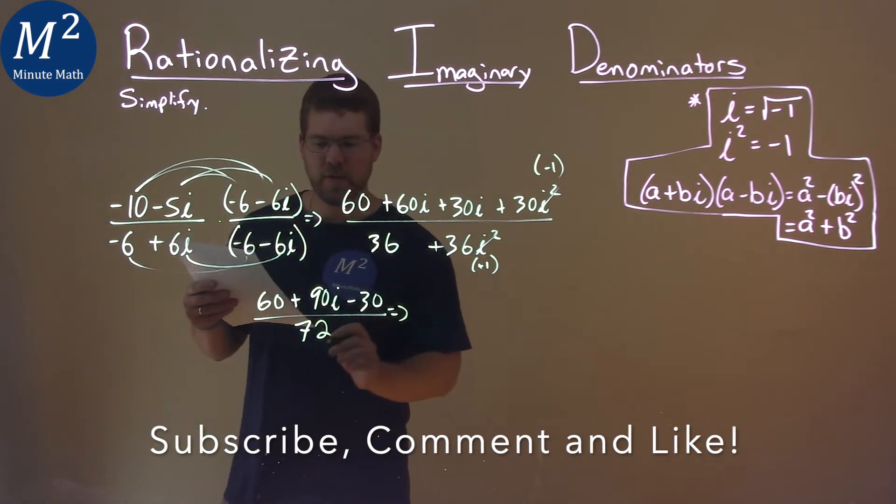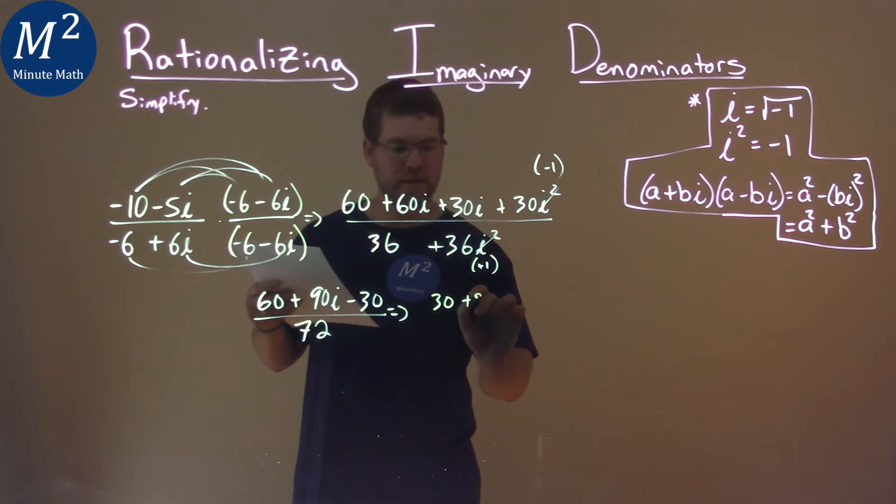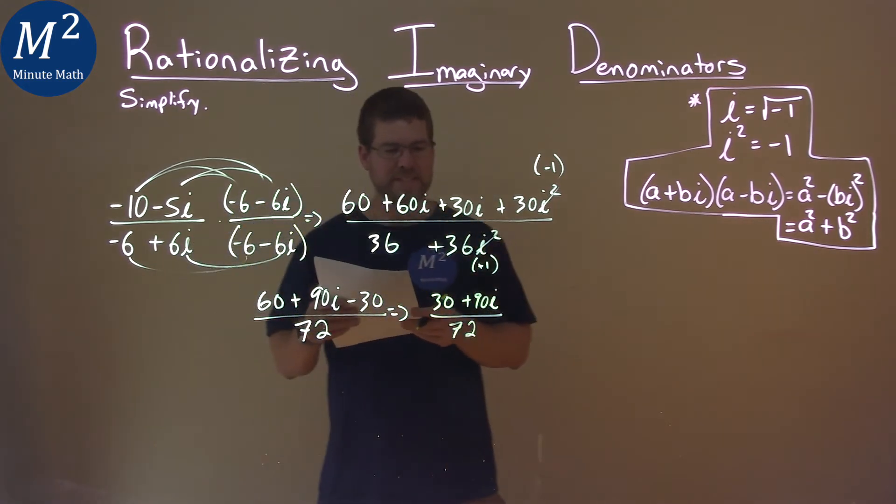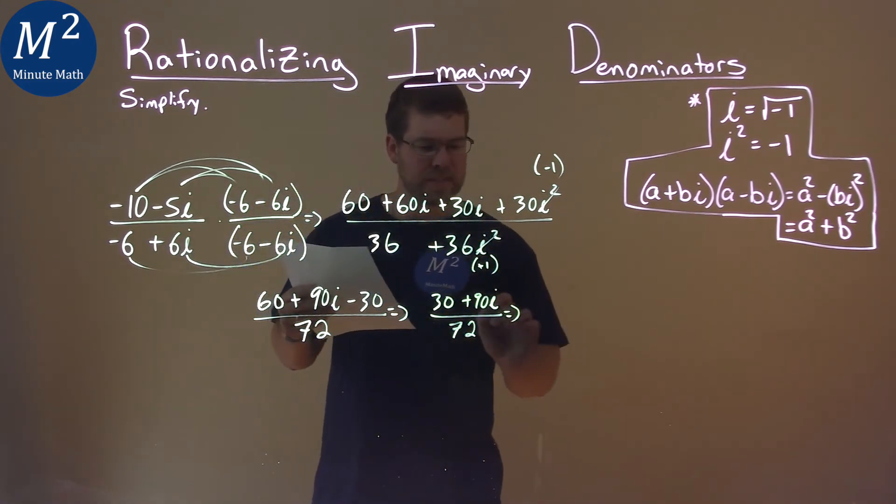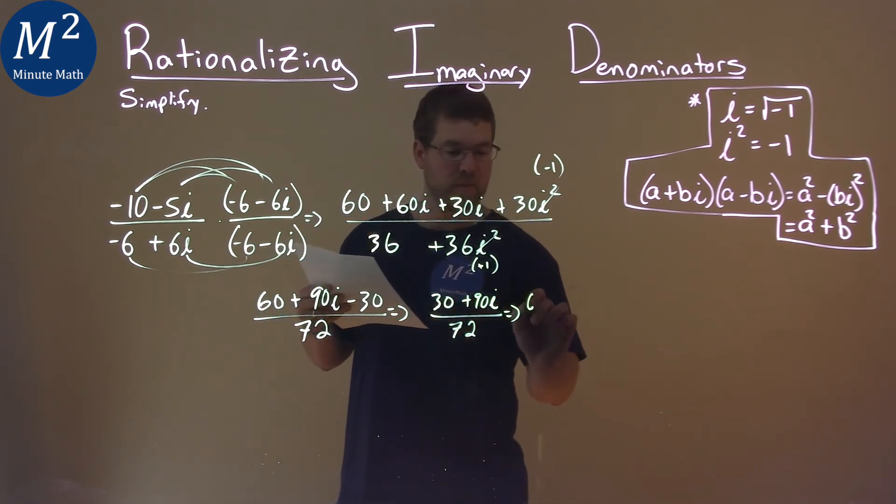Let's keep simplifying the numerator. 60 minus 30 is 30, so 30 plus 90i over 72. What can we do to simplify this? We can pull a 6 out of both the numerator and denominator.